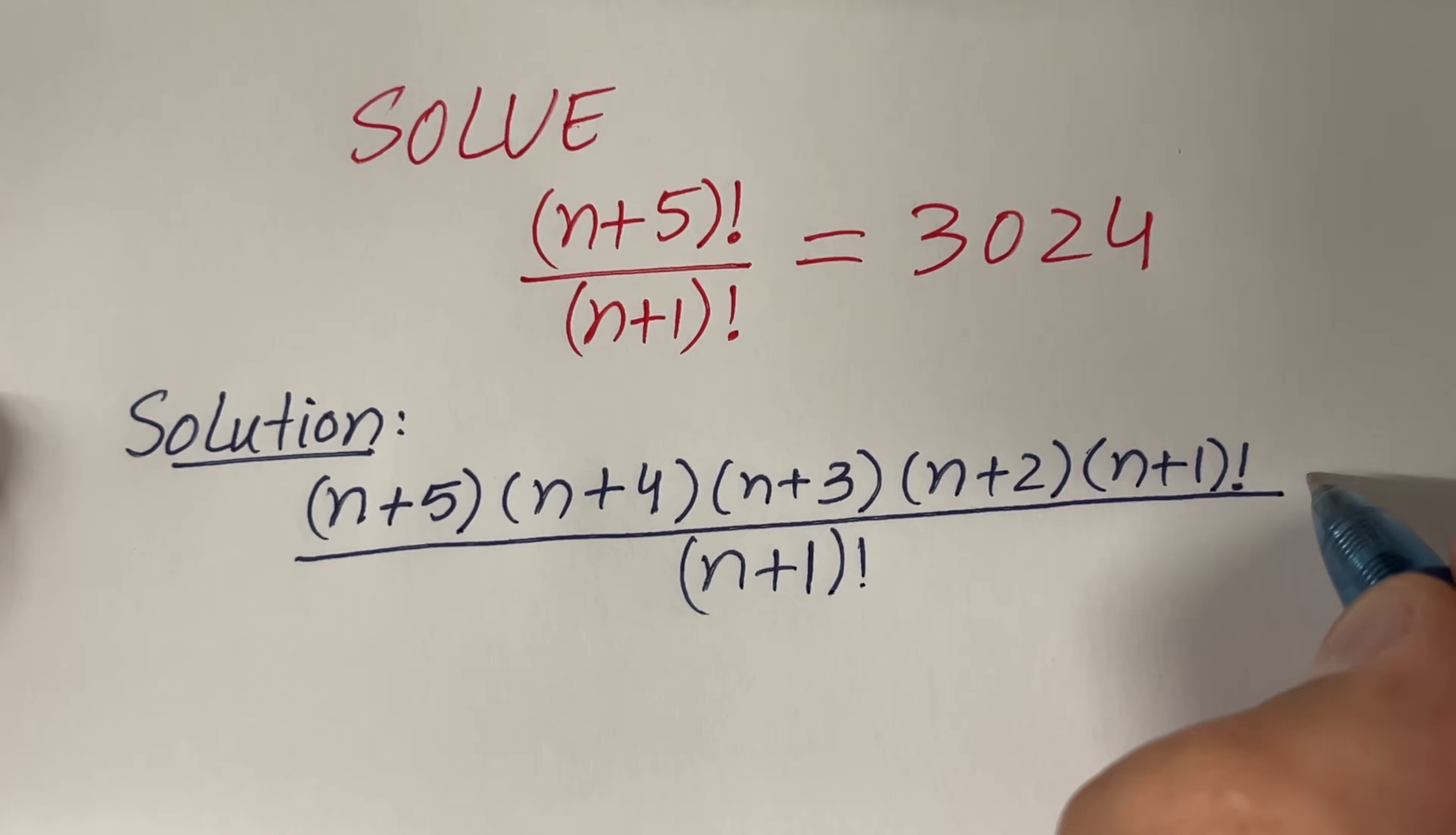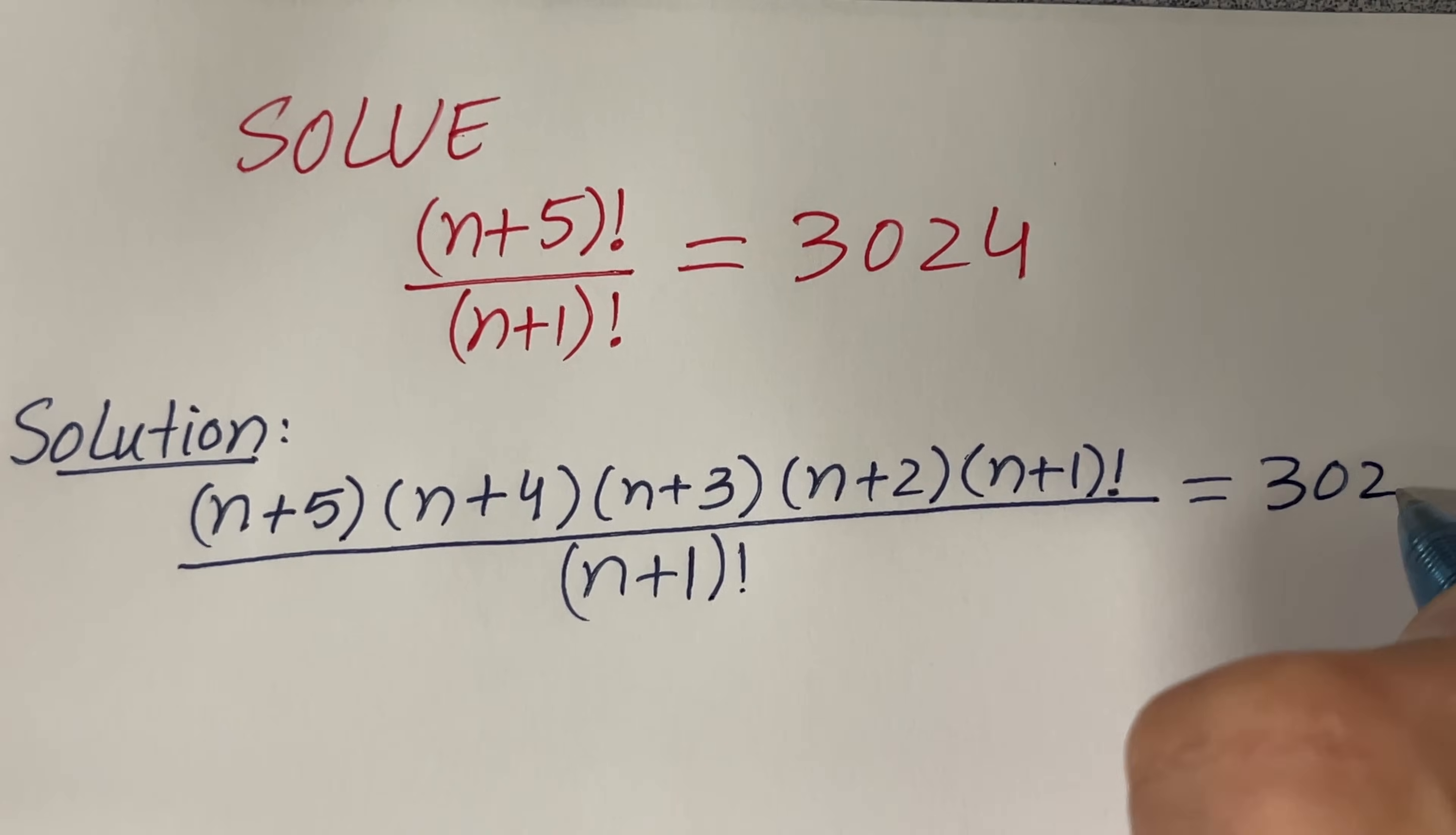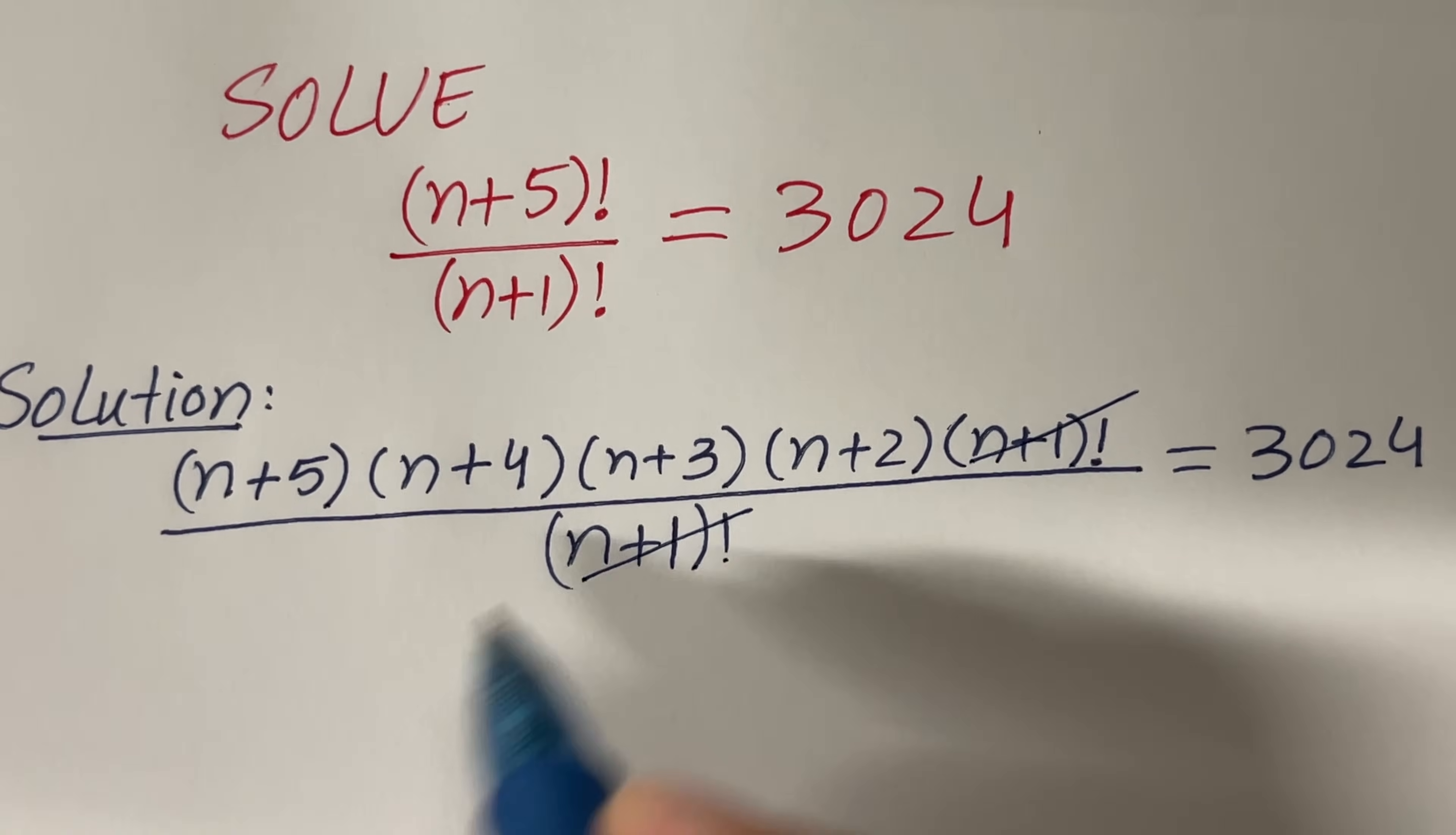And the right-hand side, I am just rewriting as 3024. So far, so good. Now we can cancel out these two guys.